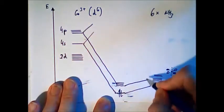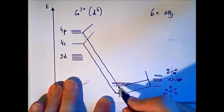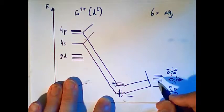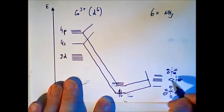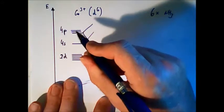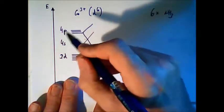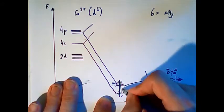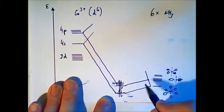Again, anti-bonding also. Three molecular orbitals with the same energy. Again, all the electrons come from the ligand. In the four p are no electrons in the cobalt. So again, all the electrons coming from the ligand.